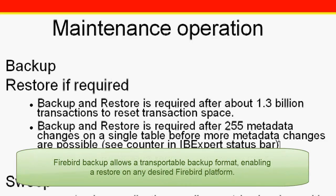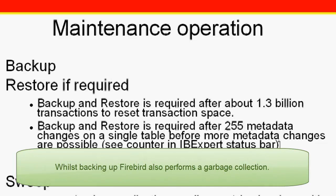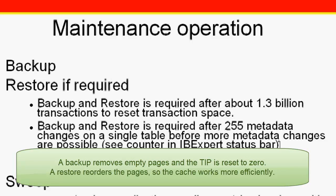The different versions of Firebird use different database file formats, so it is impossible to copy a file directly from one operating system environment to the required format of another. The Firebird backup utility allows a transportable backup format so that the file can be restored on any desired Firebird platform. Please note: when backing up and restoring from, for example, Interbase 4 to Firebird 1.5, stored procedures are restored as blobs so they may not initially work. The Firebird backup discards outdated datasets and index files, resulting in a smaller backup file — this cleaning up is known as garbage collection. Empty pages are also automatically removed during a backup and restore, which reduces the total database size. The transaction number in the TIP is reset to zero; the total number of transactions that can be recorded in a TIP is approximately 1.3 billion. The cache works with considerably more efficiency following a backup and restore as the pages are reordered.